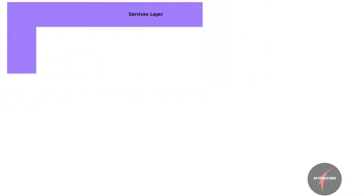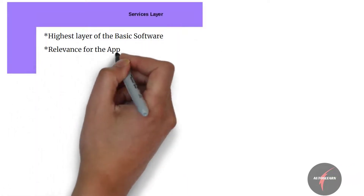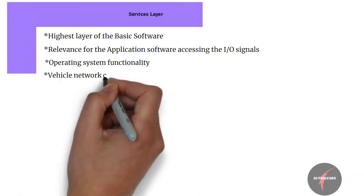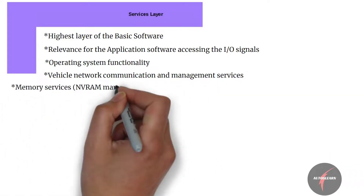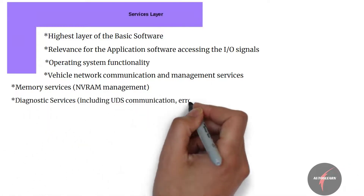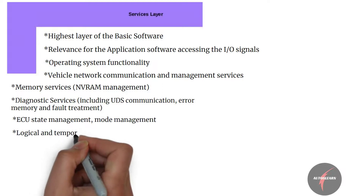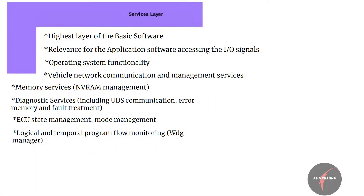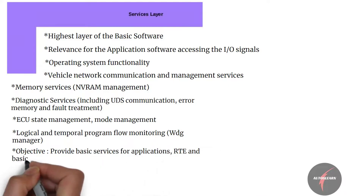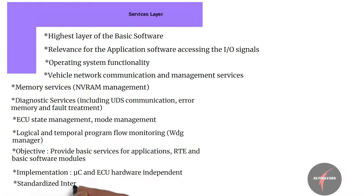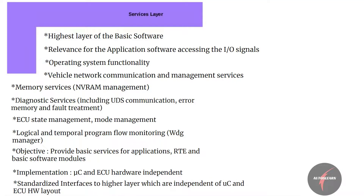Lastly, we have the service layer, which is the highest layer of basic software. The service layer has relevance for application software accessing the I/O signals covered by the ECU abstraction layer. It offers operating system functionality, vehicle network communication and management services, memory services, diagnostic services including UDS communication, error memory and fault treatment, ECU state management and mode management, and logical and temporal program flow monitoring. The objective of the service layer is to provide basic services for application, RTE, and basic software modules. Its implementation is mostly microcontroller and ECU hardware independent, and it provides standardized interfaces to higher layers independent of microcontroller and ECU hardware layout.